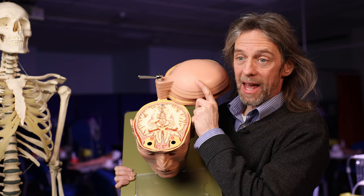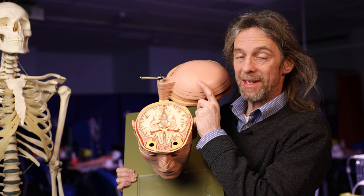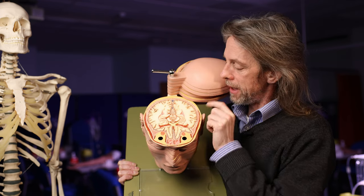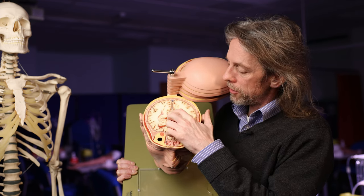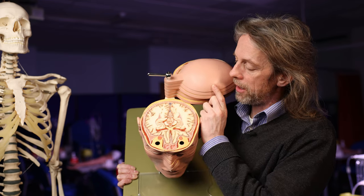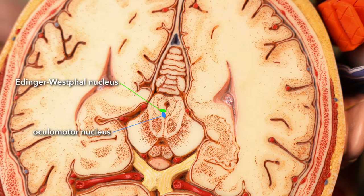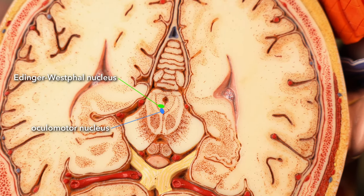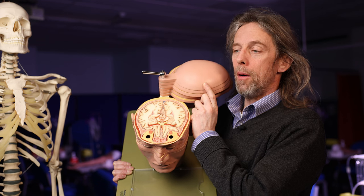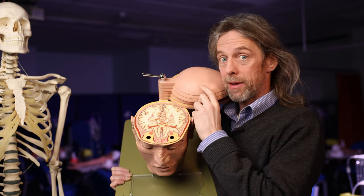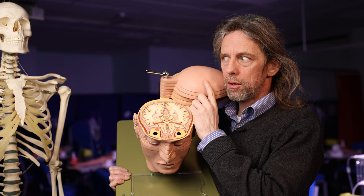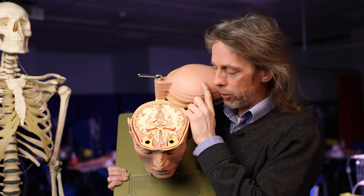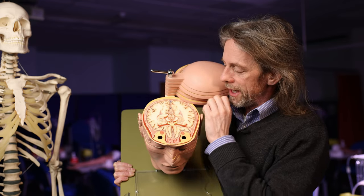The superior colliculi and the pre-tectal areas are receiving inputs from the occipital cortex as part of the accommodation reflex. And then, very nearby in the midbrain, we have the oculomotor nucleus — a collection of neuron cell bodies that are somatic motor neurons. They're going to innervate the skeletal muscles that move the eye, and you can choose to move your eye. So those are somatic motor fibers.